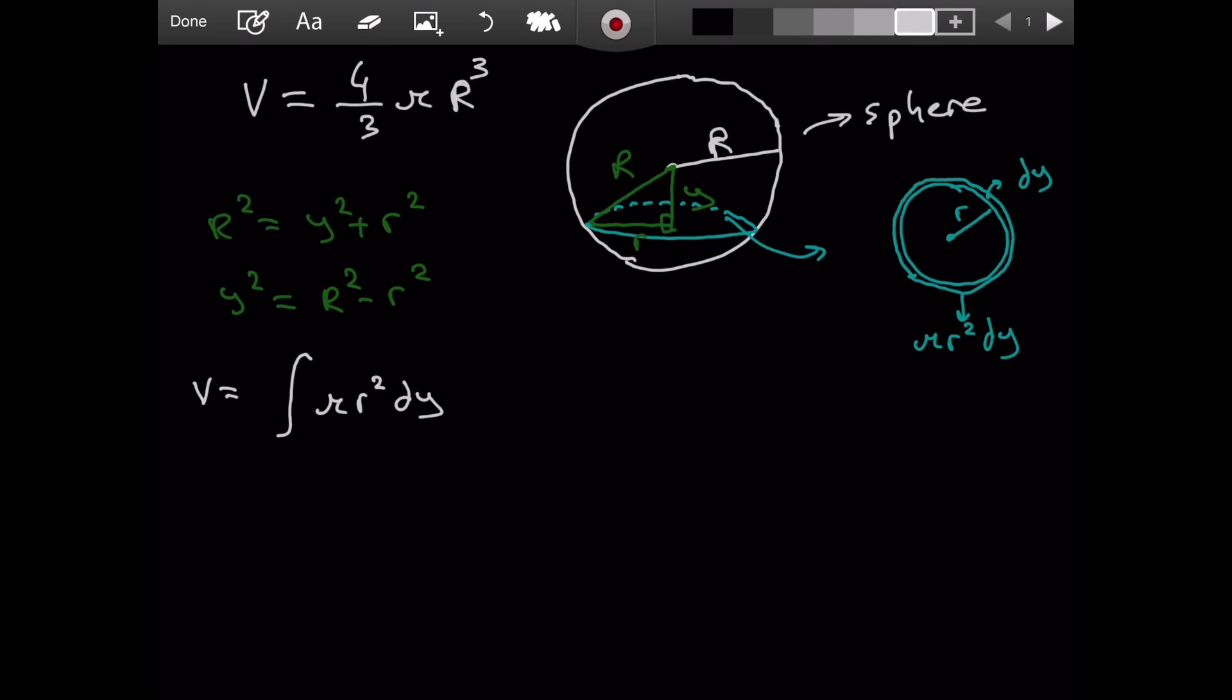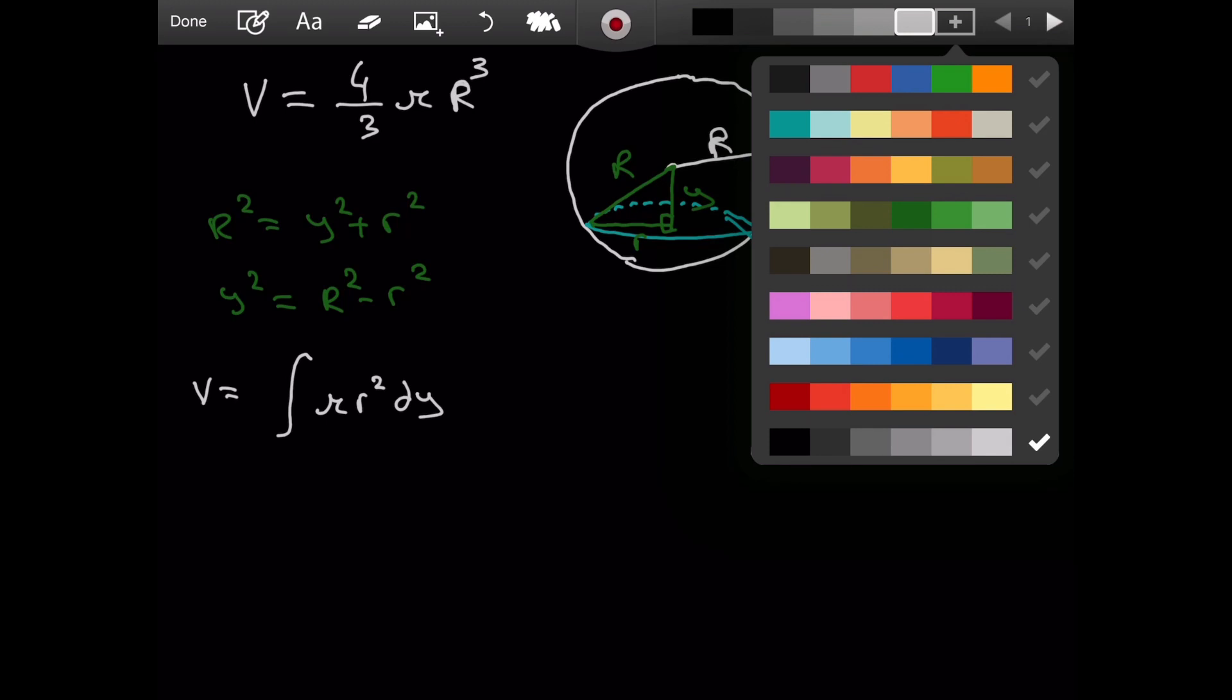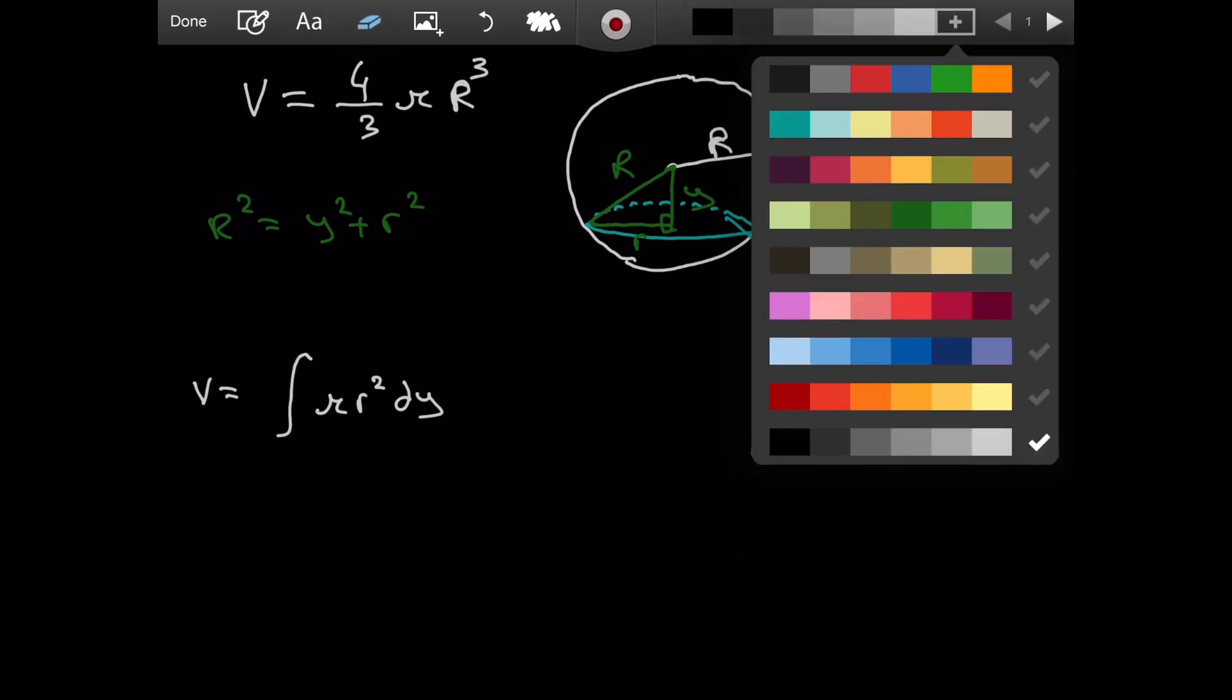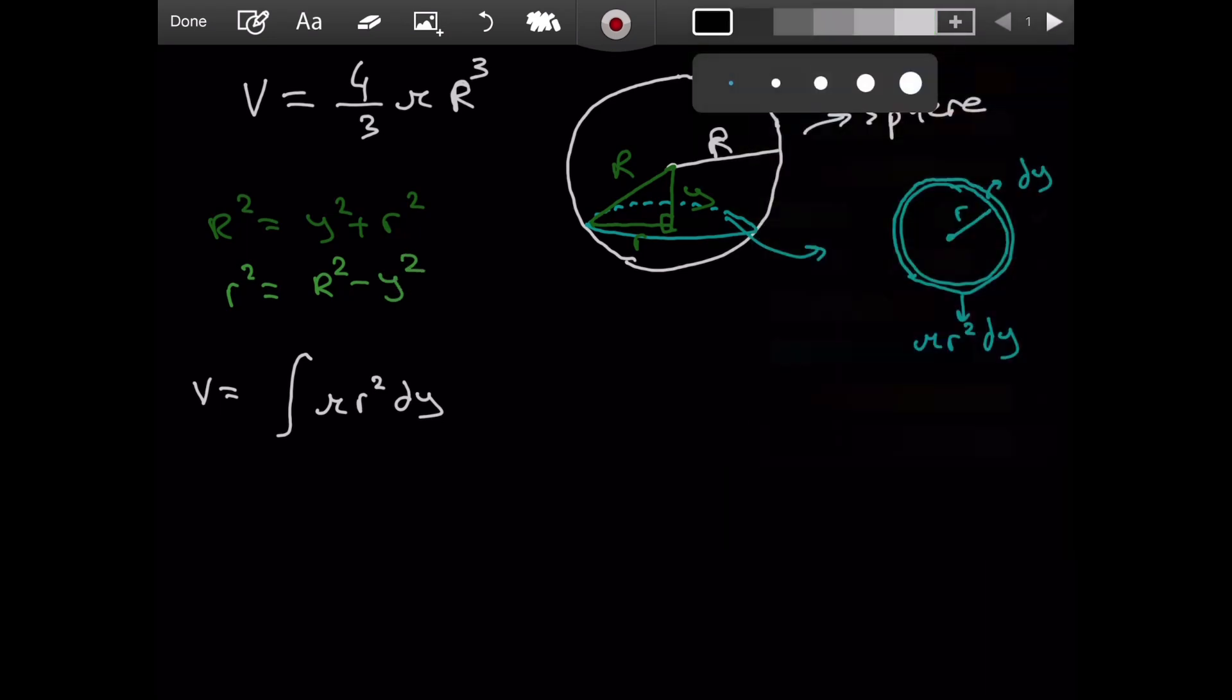And I actually noticed that for the green part, we shouldn't have solved it for y squared. Let's erase that. Let's solve it for r squared. That was a mistake. So, r squared is equal to r squared minus y squared. Now, we can continue.